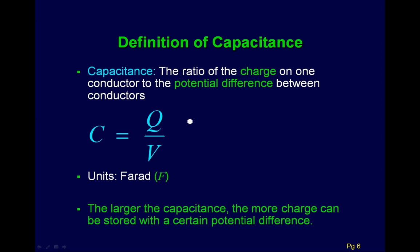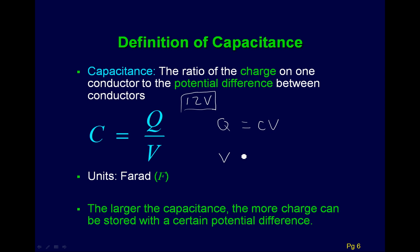The big equation for capacitors defines the capacitance: capacitance is how much charge you can store per potential difference. In that last example, using a 12-volt car battery, the larger your capacitor, the more charge you can store from that 12-volt battery. The units are farads, and the larger the capacitance, the more charge you can store per potential difference. This equation has three elements, and you'll be asked to solve for different pieces.